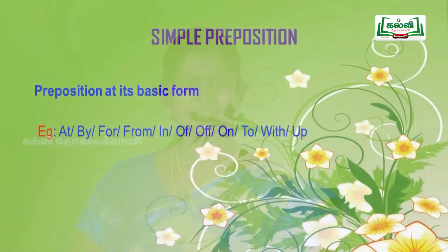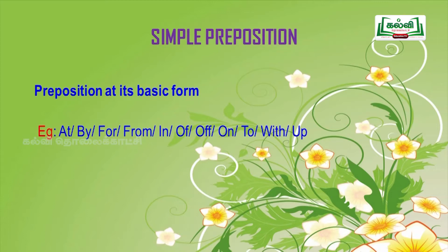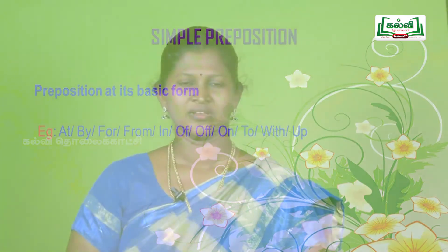The first kind is simple preposition — prepositions in their basic form. For example: at, by, for, from, in, of, off, on, to, with, up. These are prepositions at their basic form — simple words.